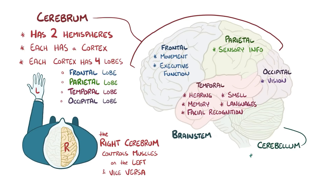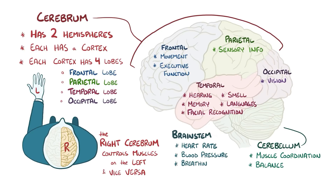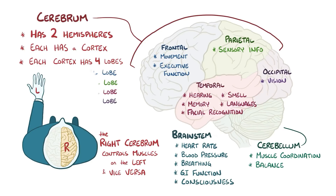The cerebellum helps with muscle coordination and balance. And finally, there is the brain stem, which plays a vital role in functions like heart rate, blood pressure, breathing, gastrointestinal function, and consciousness.